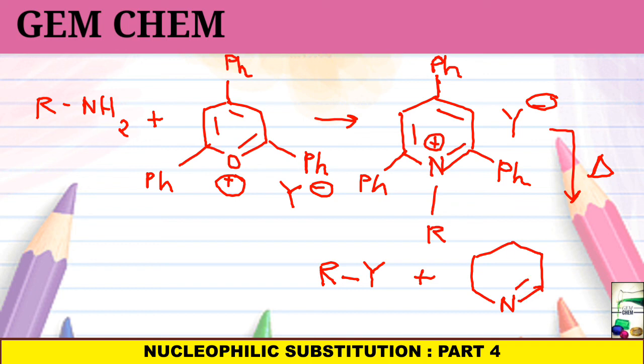Nitrogen present in the ring and the 3 Ph. This becomes neutral. And this is an easy method of nucleophilic substitution.